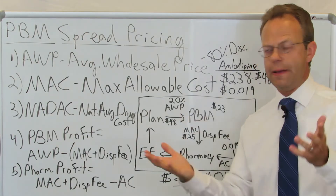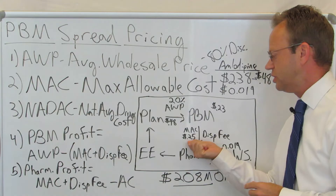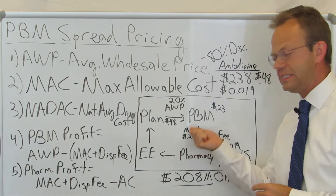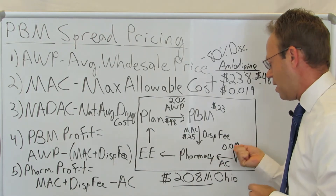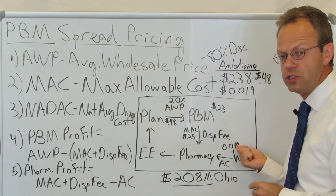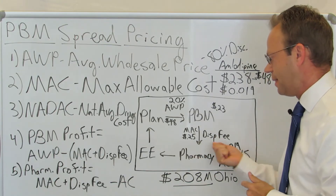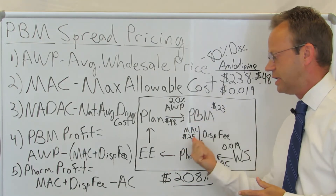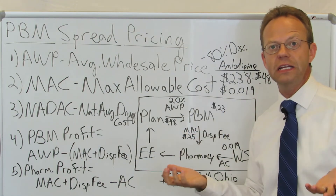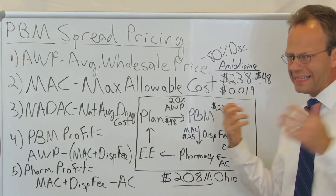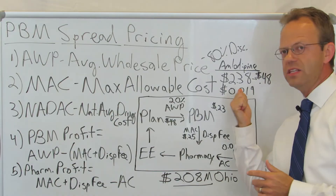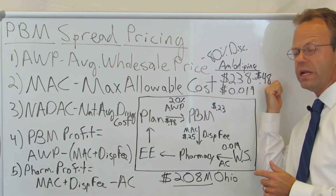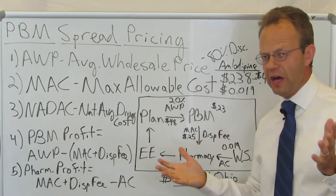For example's sake, let's say the MAC plus the dispensing fee total is $0.25. That means the PBM is holding on to $0.23, and the pharmacy takes in the full $0.25 but then has to pay out $0.02 to buy the drug — that's their cost. So if you take $0.02 off of $0.25, that gives you $0.23. In this particular example, the PBM is getting $0.23 and the pharmacy is getting $0.23 in profit each. Now, that doesn't sound like a lot because we're talking about pennies — but keep in mind, this drug costs about $0.02, and the plan paid $0.48 for it. That's almost exactly 25 times more.